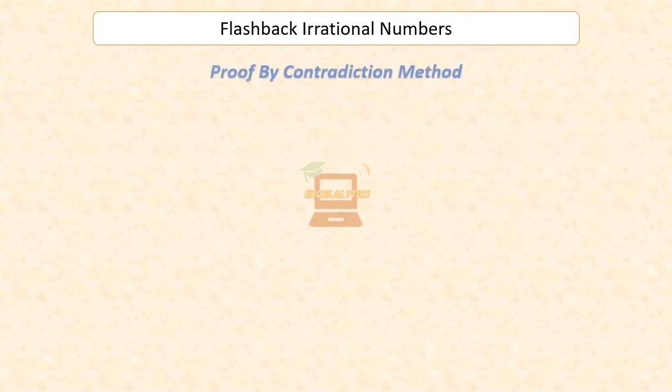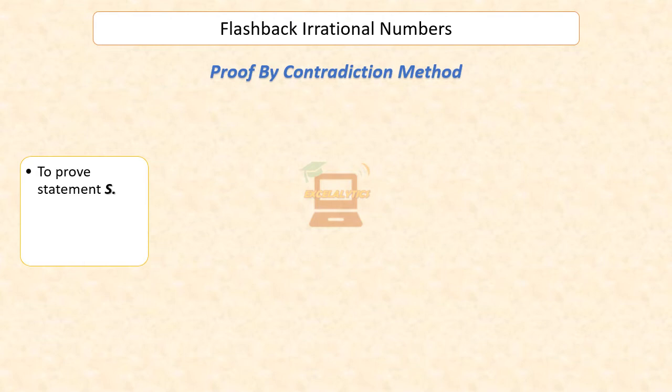How does proof by contradiction work? Suppose we want to establish the truth of a statement s. We begin by assuming the opposite statement to be true, that is, we assume that the negation of s is true.